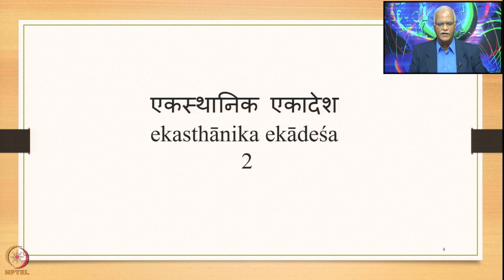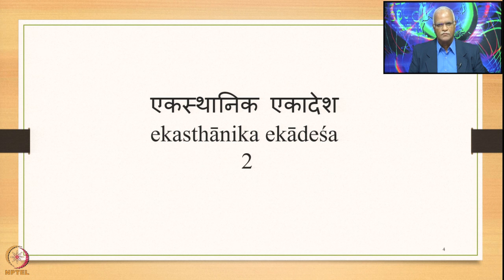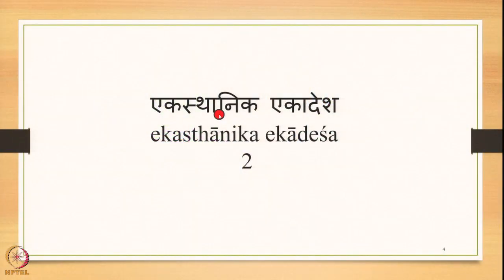There are two instances of this type of Ach Sandhi: Ikoyanachi and Ejoyavayavaha. These are the two sutras stating Yansandhi and Ayavayav Sandhi respectively. The second classification is Dvishthanika Ekadesha, where you have two substituents and one substitute, which we shall study soon. Right now we are focused on the second instance of Ekasthanika Ekadesha, which is Ayavayav Sandhi.